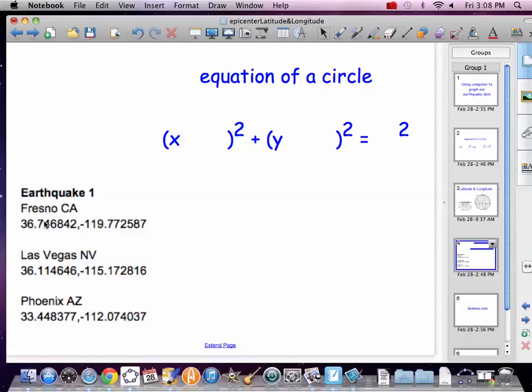Now, I looked up some data. Fresno is at 36.7 and negative 119.7 something. All these decimals are just for really good precision, getting those places down exactly.